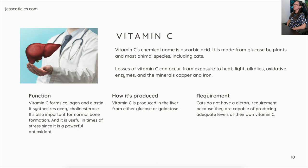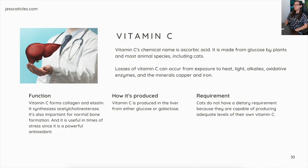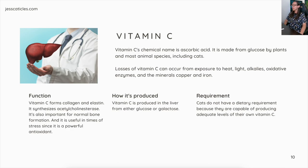Vitamin C. The chemical name is ascorbic acid. It's made from glucose by plants and most animal species, including cats. Losses can occur from exposure to heat, light, alkaline oxidative enzymes, and the minerals copper and iron. Vitamin C forms collagen and elastin, synthesizes acetylcholinesterase, supports normal bone formation, and is a powerful antioxidant useful in times of stress. It is produced in the liver from glucose or galactose. Cats do not have a dietary requirement because they can produce adequate levels on their own.